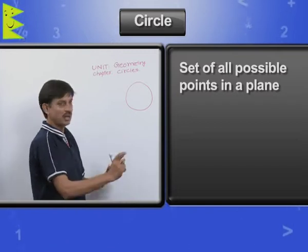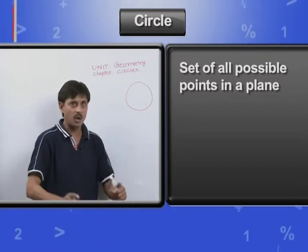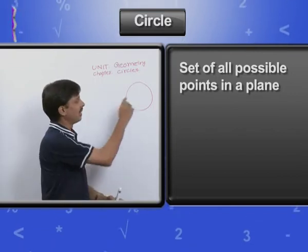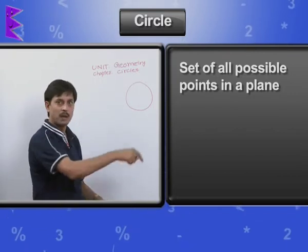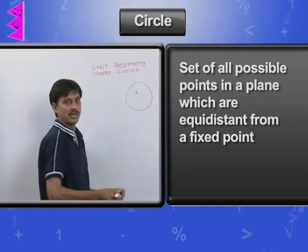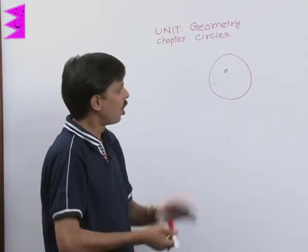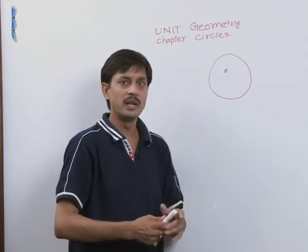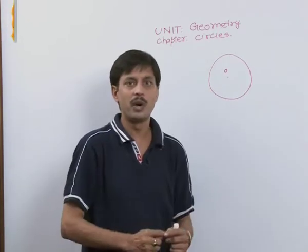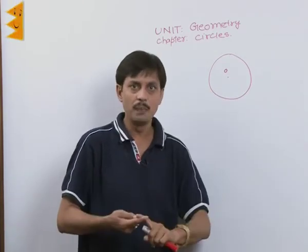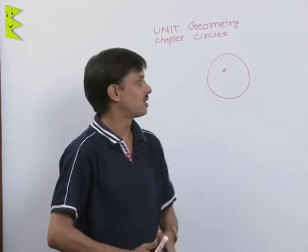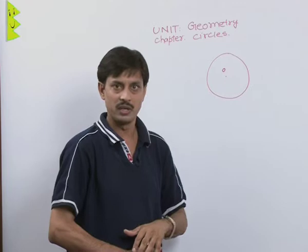Circle is the set of all possible points in a plane which are equidistant from a fixed point. Or sometimes, we say: circle is the locus of a moving point in a plane such that it remains always at equal distance from a fixed point.